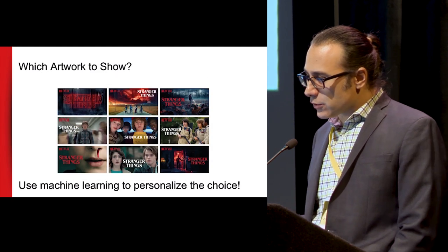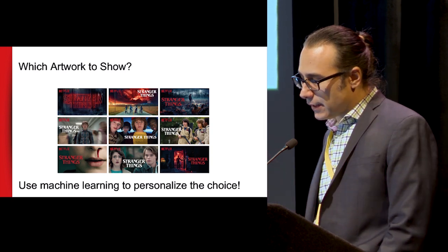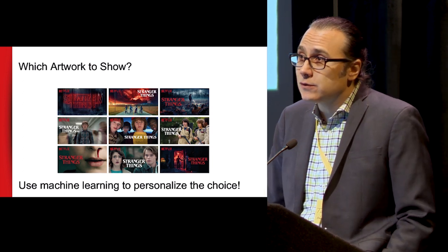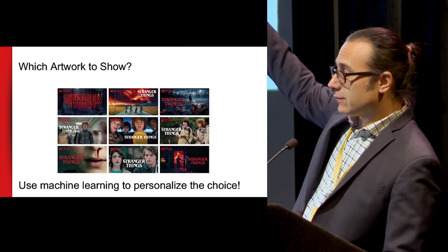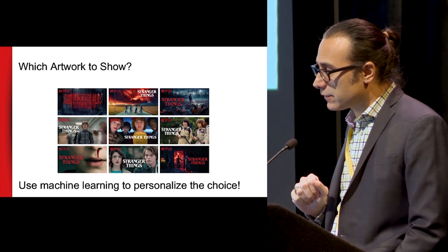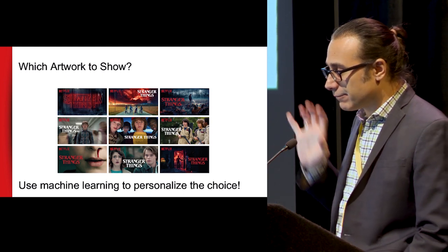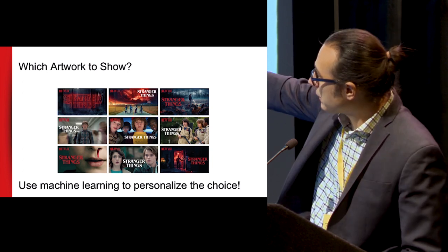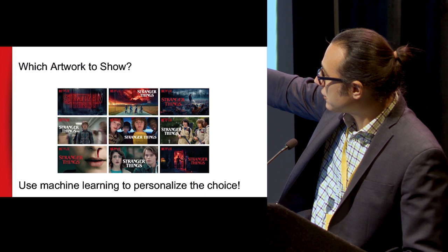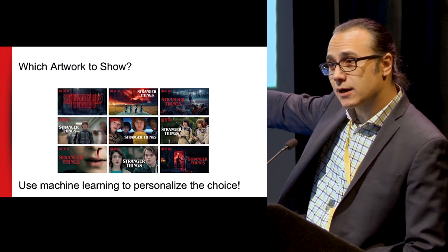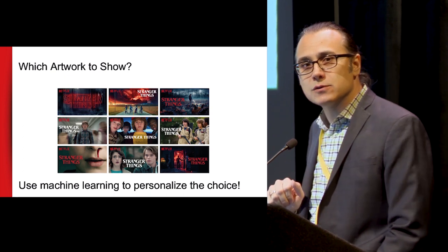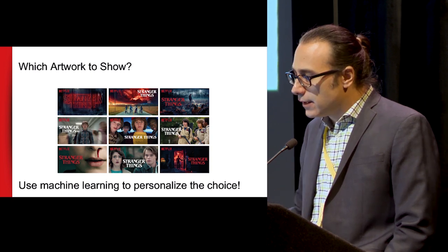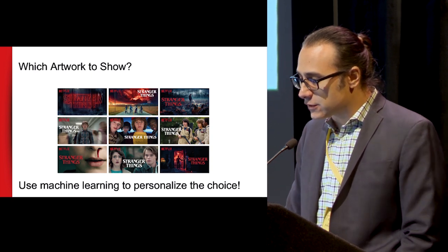The question became: which artwork should we show for different movies? Using machine learning, we decided to change the answer for every single user. Maybe some users really like a spooky, scary forest-looking image — it tells you there's a scary aspect. Maybe other users like an image showing a relationship between two teenage characters — interesting for users who want a story they can relate to. So we thought: let's use machine learning to personalize that decision.